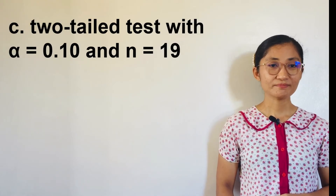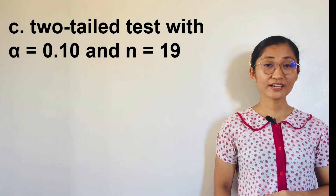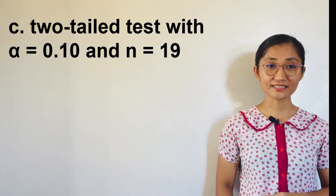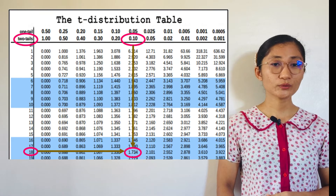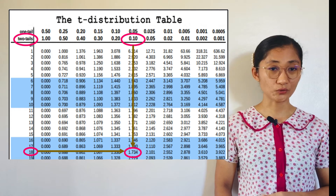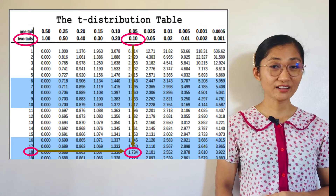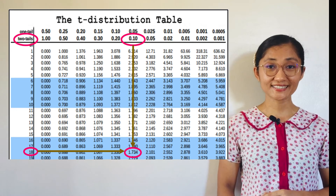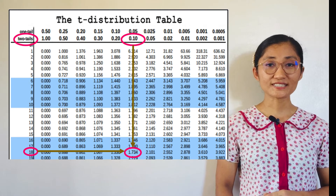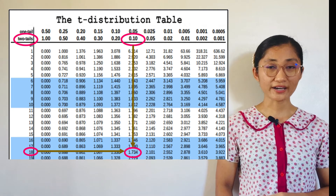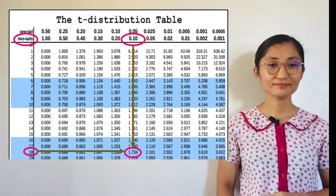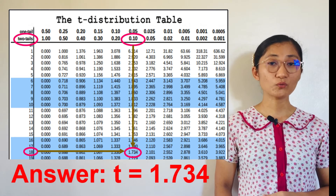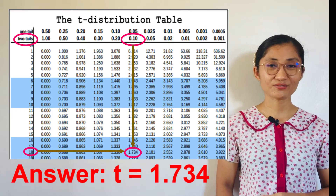For letter C: Two-tailed test with alpha equals 0.10 and n equals 19. In the T-table, we refer to the two-tailed test row and search for alpha equals 0.10. Then df equals 18, since df equals n minus 1, or 19 minus 1. This tells us that T equals positive or negative 1.734.